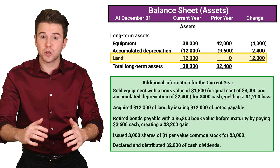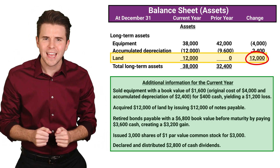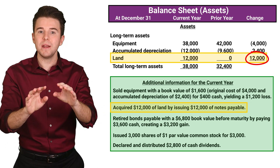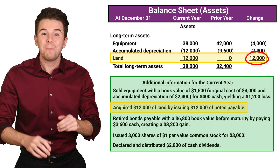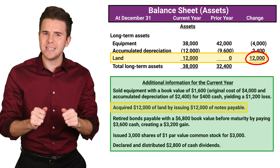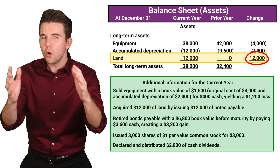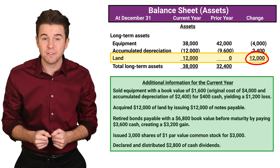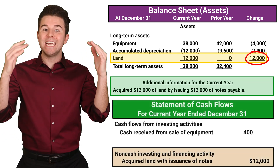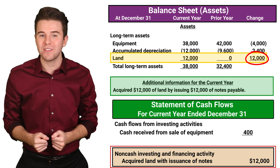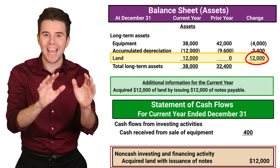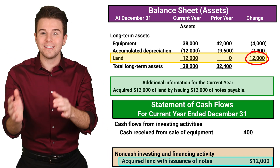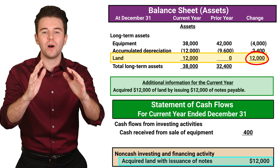We see that land increased by $12,000. Looking at our additional information, the company acquired $12,000 of land by issuing $12,000 of notes payable. Because no cash was ever exchanged, but there still is a significant investing and financing activity, we report it on a separate schedule to the statement of cash flows under non-cash investing and financing activity — the company acquired land with issuance of notes for $12,000.